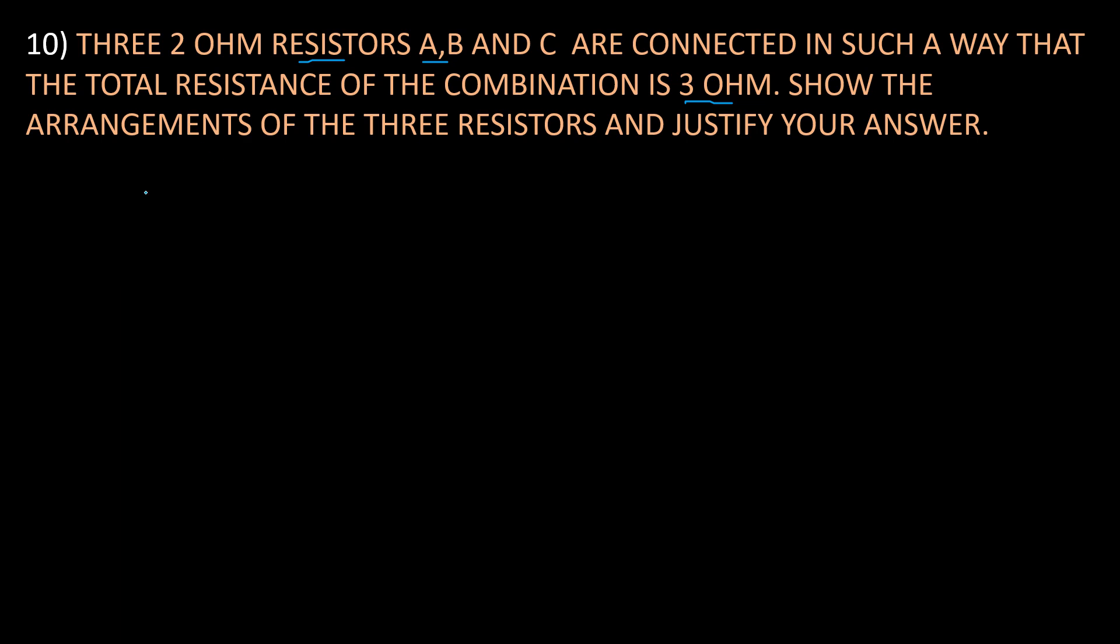How to generally? So we need to write the given data. So what is the given data? So here you can observe three resistors are given. So one that is A, this is A. How much? 2 ohm resistance. And third one, second one is B, 2 ohm resistors. And third one you can see that is C, 2 ohm resistors.